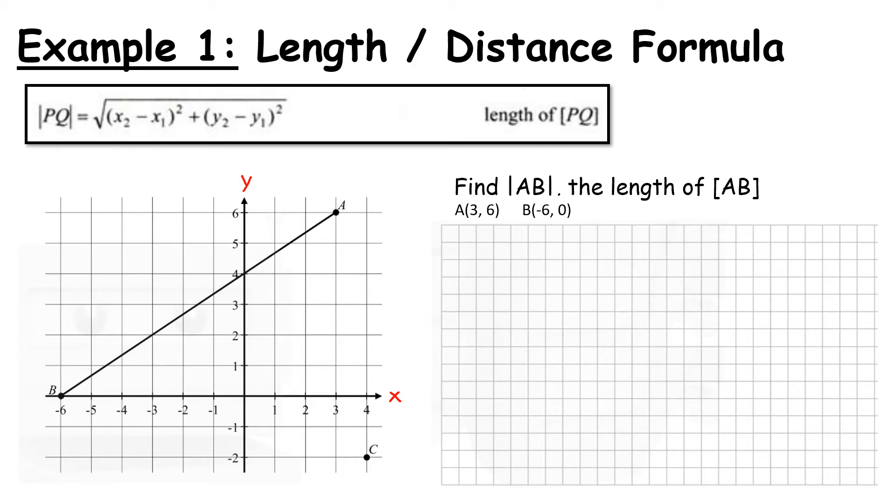The first thing we're going to do when we use any one of these formulas is we're going to label. So at the top of page 18, it teaches you how we can label if you forget. But we simply do X1, Y1. So this is the X of the first point and Y of the first point. We then have X2, Y2. Notice that these are subscripts. Do not write them too big and do not write them at the top. They are at the bottom. Because if you look up here, this is very different to an X squared.